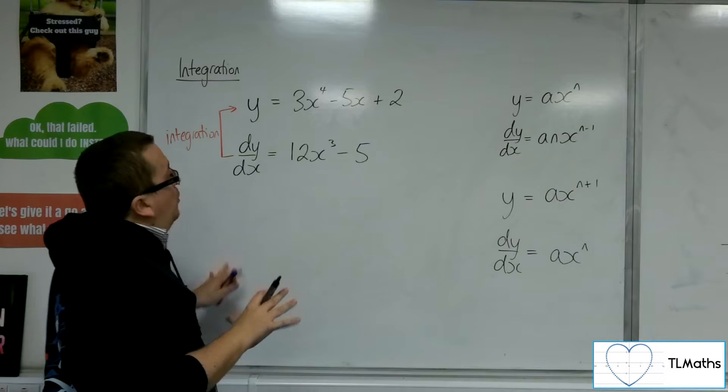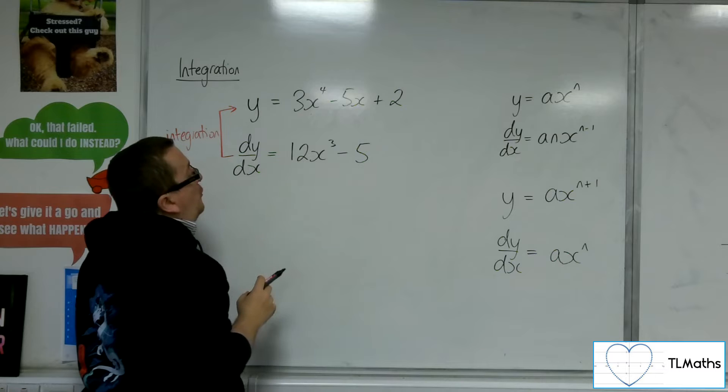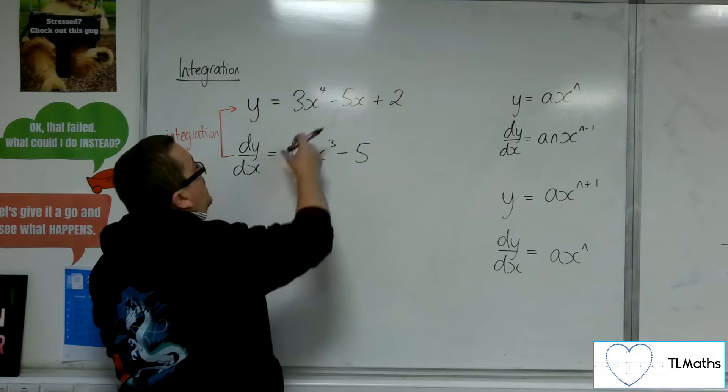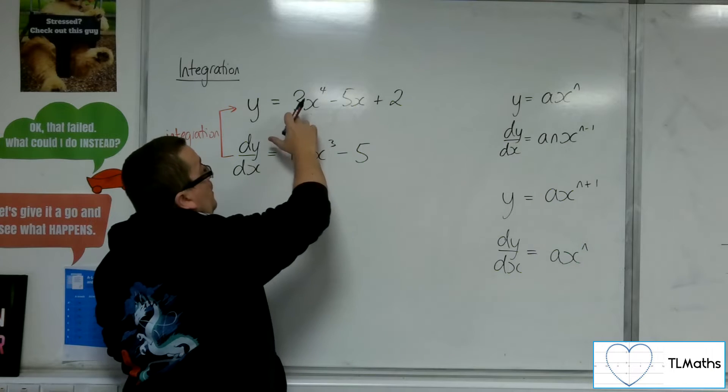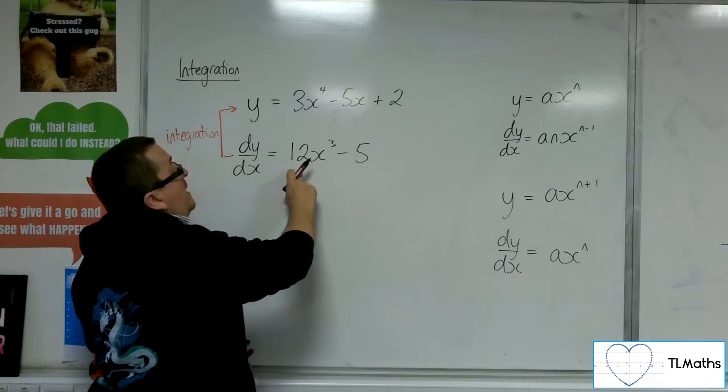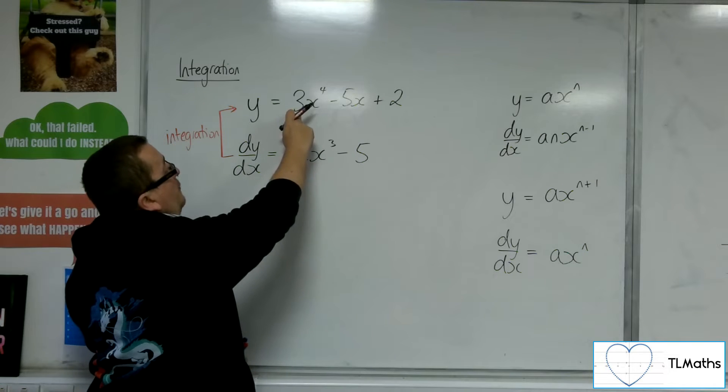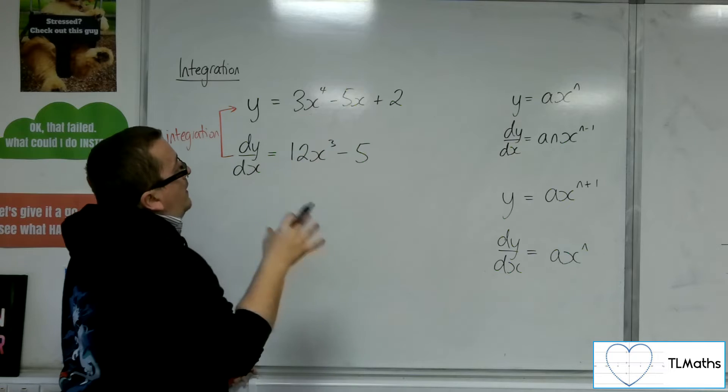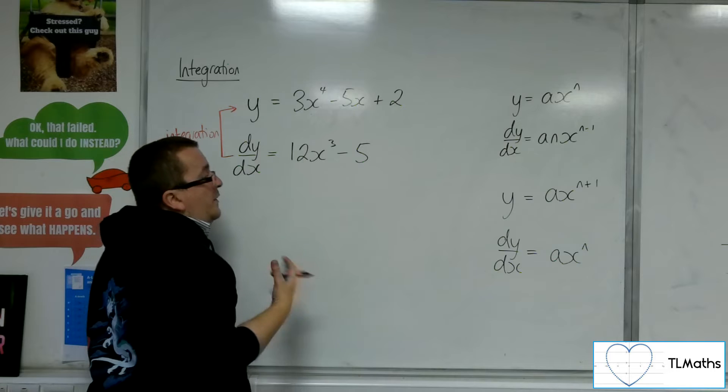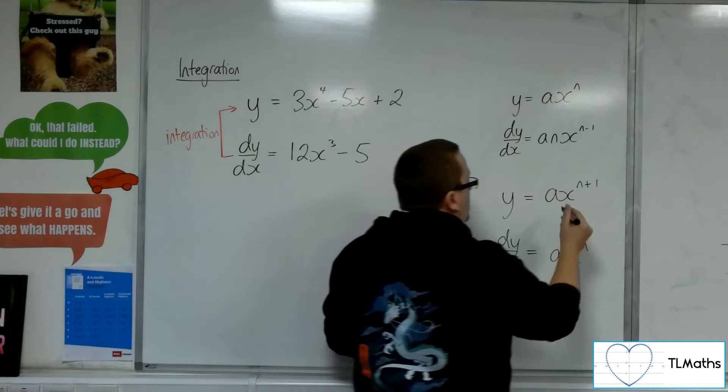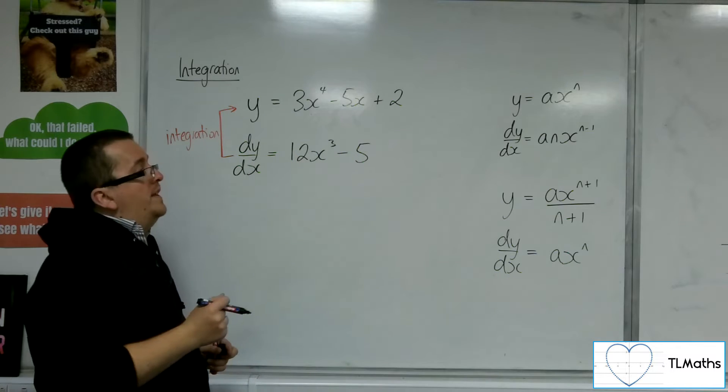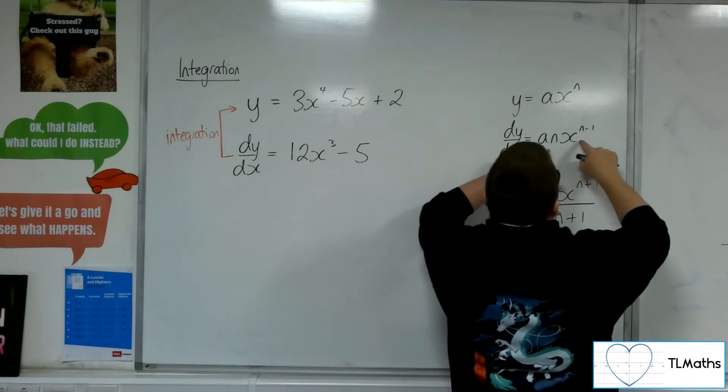However, that's not all that happens because this isn't 12x to the 4 when I move up. What's happening? Well, the 3 was multiplied by the 4 to get to 12. So in order to get back to 3, I'm going to have to divide by 4. So really, I need to divide by this new power that I've got. So I need to be dividing by that new power, the n plus 1.